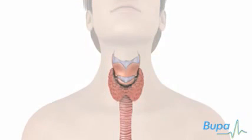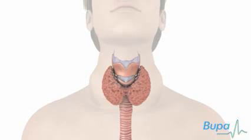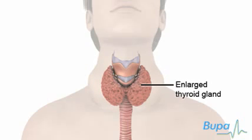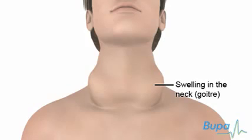Your symptoms will depend on how much of the thyroid hormones your body is producing. You may not notice any symptoms at first. As your thyroid gland becomes less active, you may begin to feel more tired and put on weight. Some types of underactive thyroid can cause a swelling in the neck called goiter. Here we show what goiter looks like. Not everyone who has an underactive thyroid will have this neck swelling.